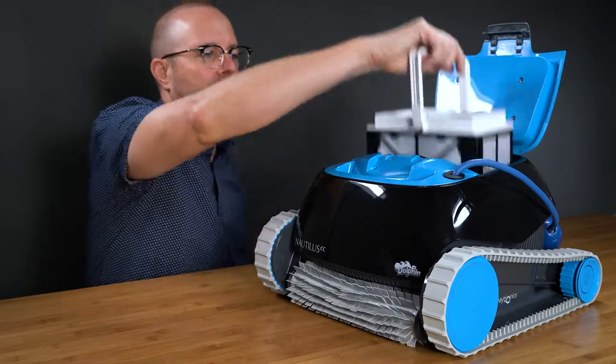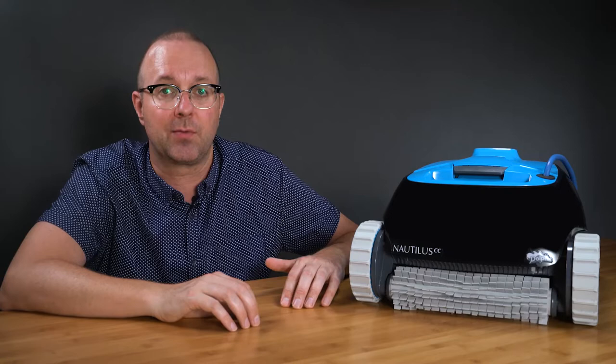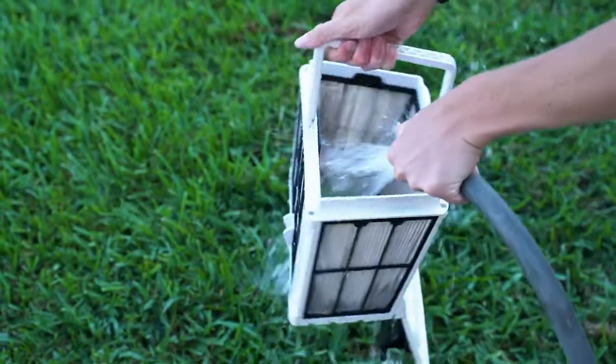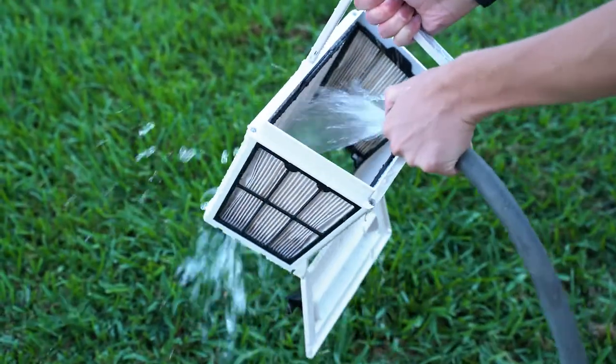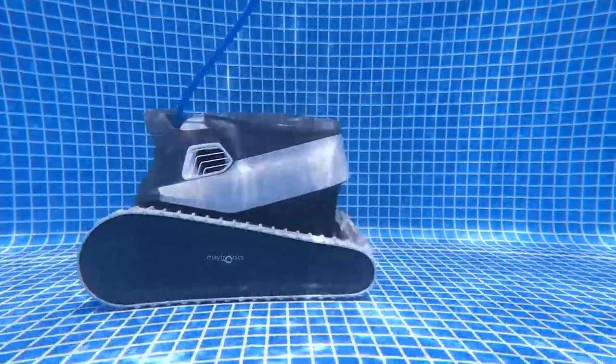Next, the Nautilus CC does have this standard fine filter basket. While it looks similar to the filter basket found on the Dolphin Quantum, it's really not. The Quantum comes with another filter media option, the Ultra Fine Filter. This filter allows the Quantum to clean particles around 2 microns.